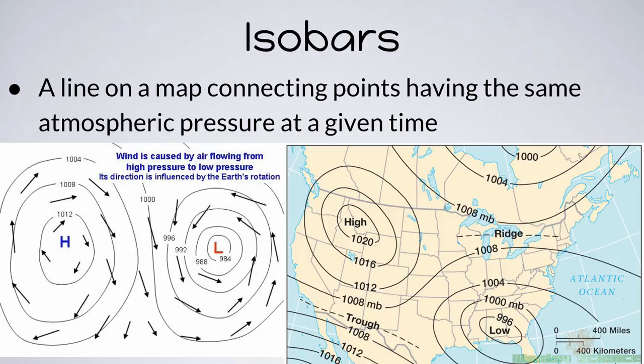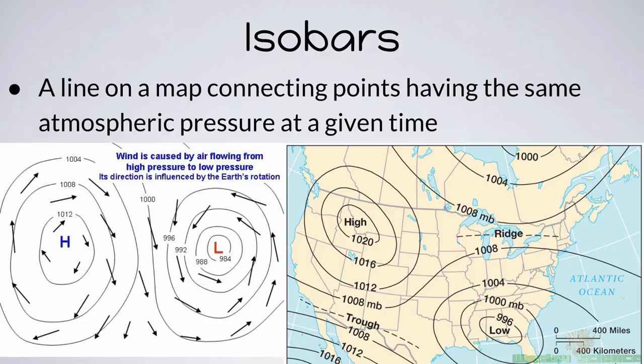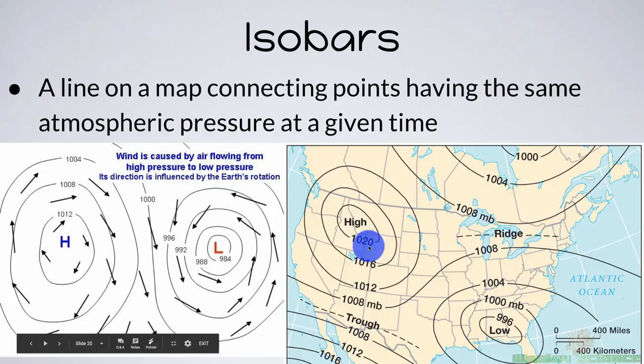Now let's look at isobars. Isobars are really important in weather. They are lines on maps that connect points having the same atmospheric pressure at a given time. What they reveal to us are the high and low pressure systems. We can see an example of some isobars here — we can see a high pressure system and a low pressure system.